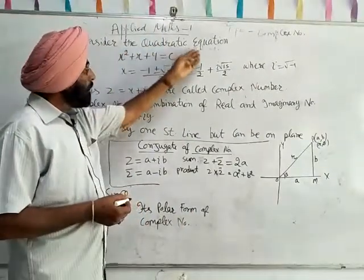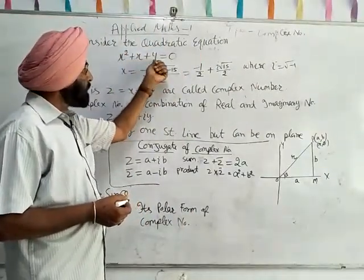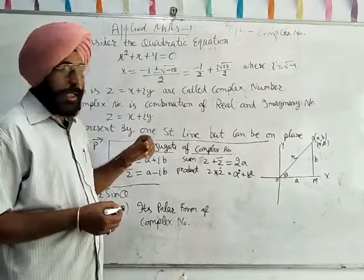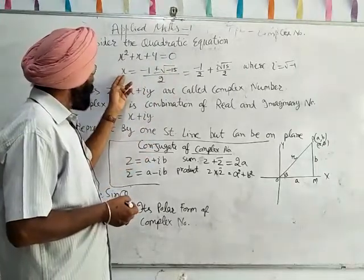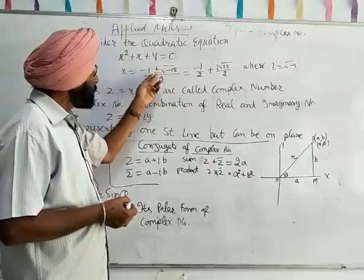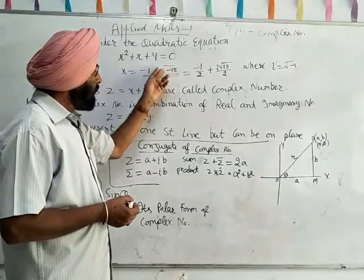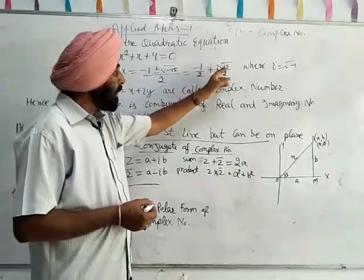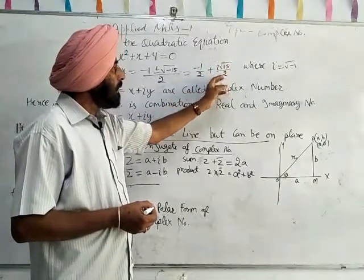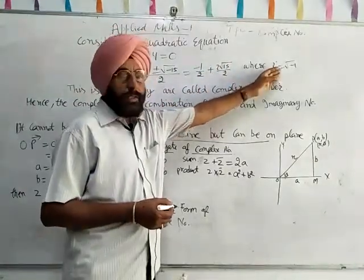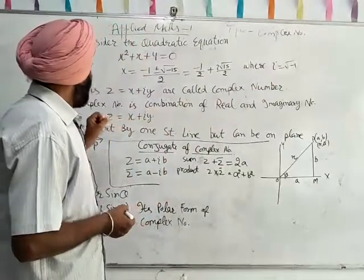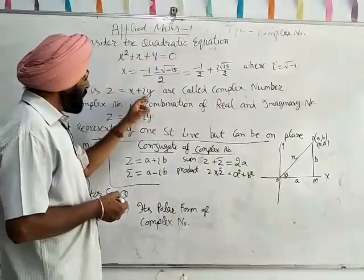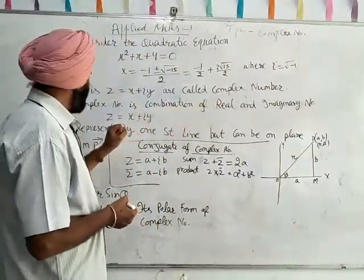Consider the quadratic equation x² + x + 4 = 0. The solution is x = -1 ± √(-15) over 2. This is -1/2 ± i√15/2, where i² = -1. This x = x + iy is called a complex number.